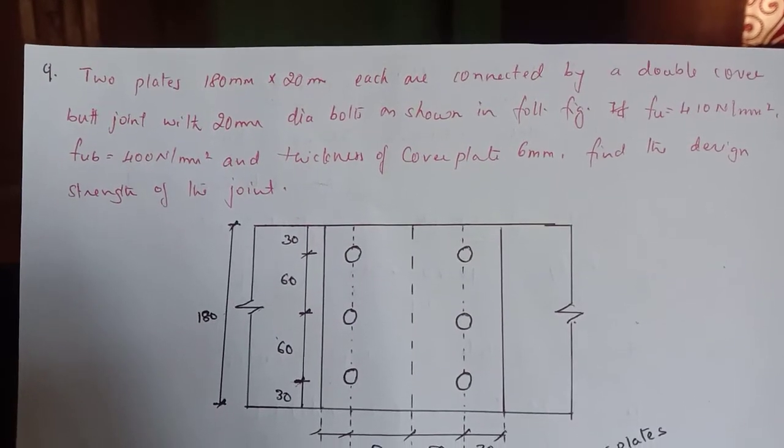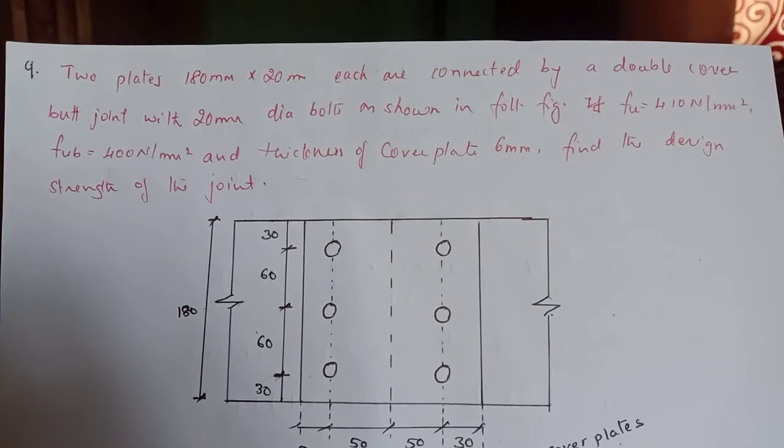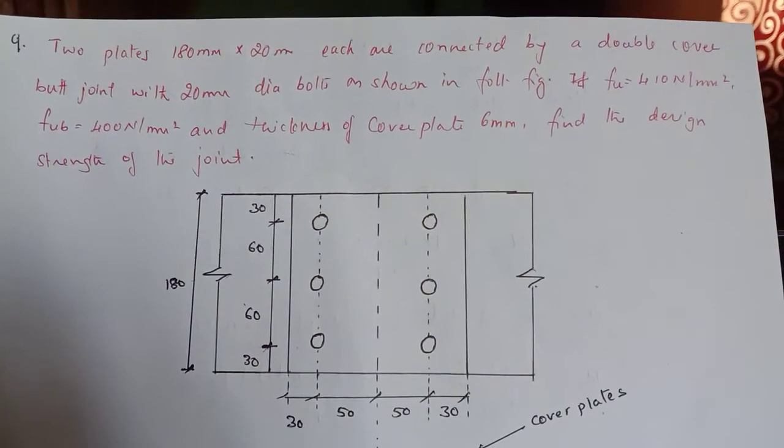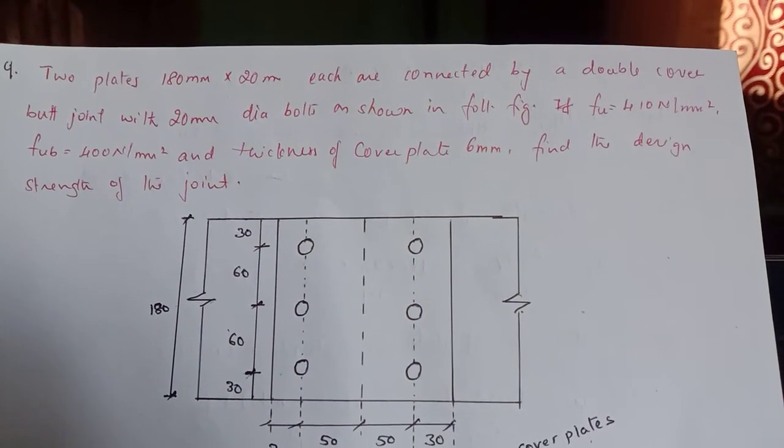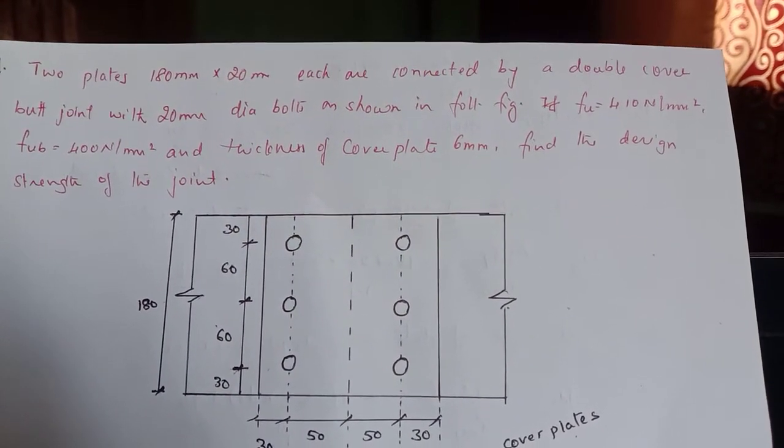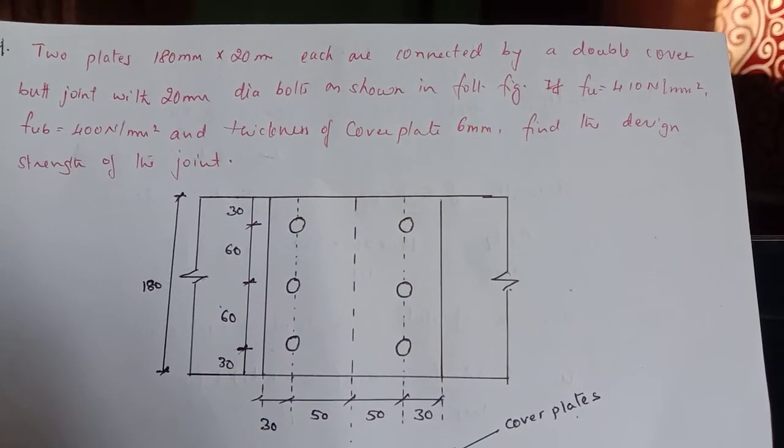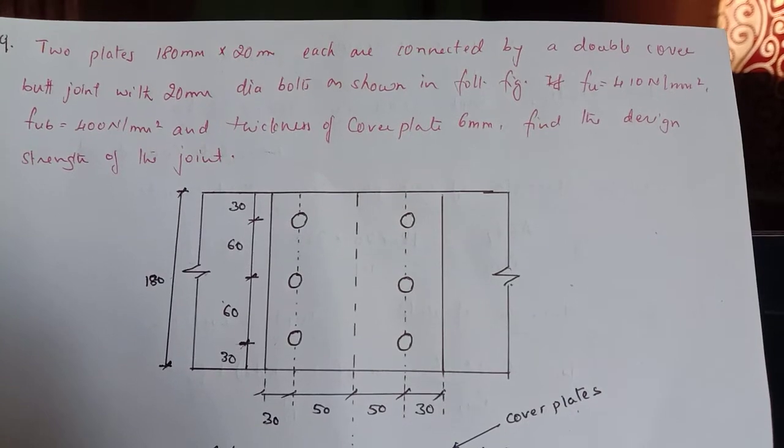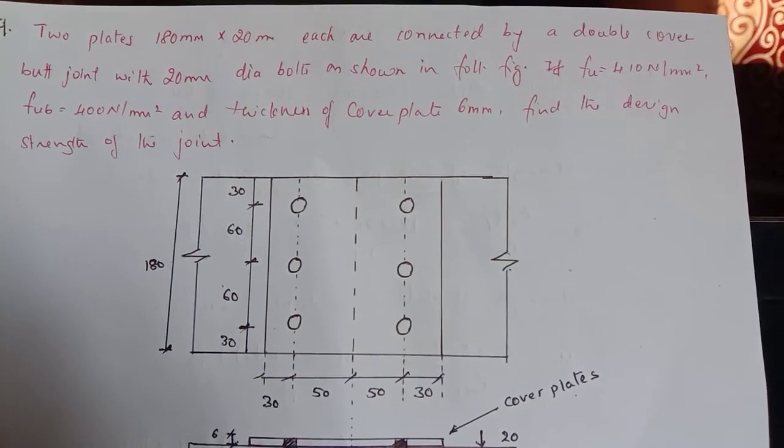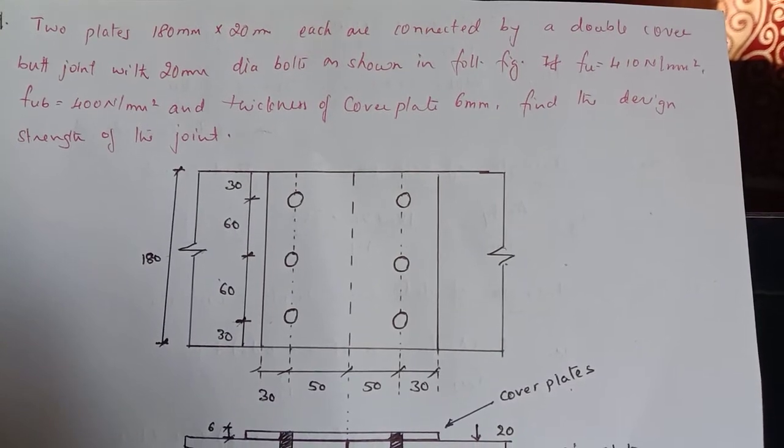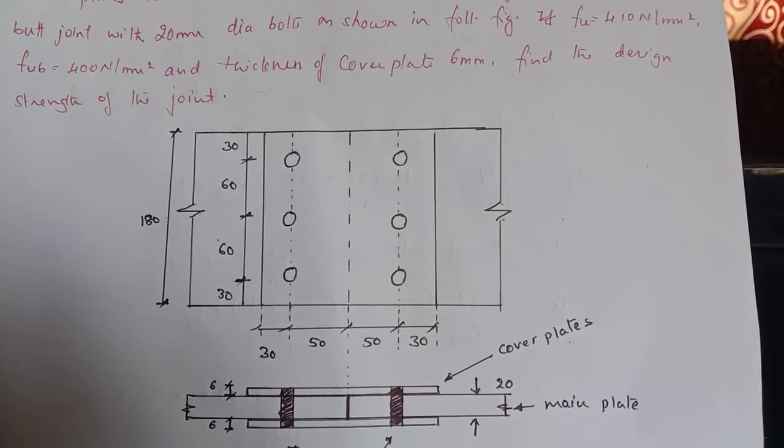Dear students, here are few problems listed out under butt joints. Till now we have seen problems of lap joint. So let us take a problem. Two problems we will take today. Two plates 180 mm into 20 mm each are connected by a double cover butt joint with 20 mm diameter bolt as shown in the following figure. If FU is 410 N/m² and FUB 400 N/m², thickness of cover plate 6 mm, find the design strength of the joint.